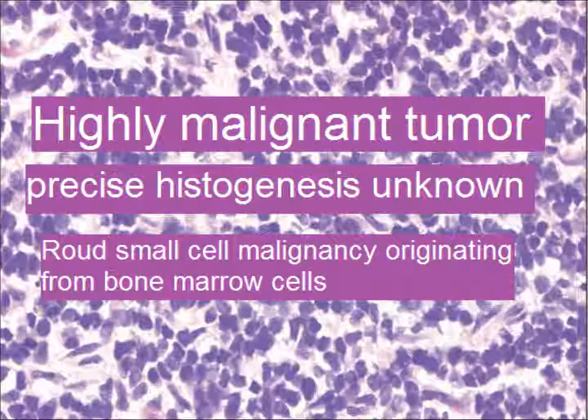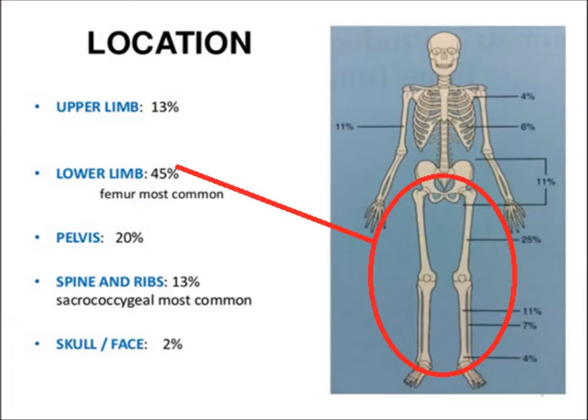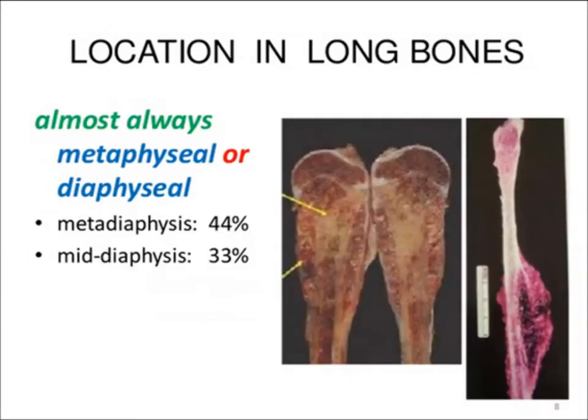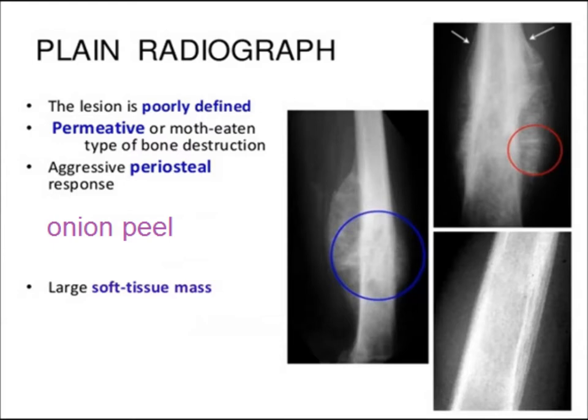It commonly involves the long bones, more commonly the lower limb bones. It is metaphyseal or diaphyseal in location. On X-ray, there is a destructive lesion and may be a moth-eaten appearance, with soft tissue extension and onion peel periosteal reaction.